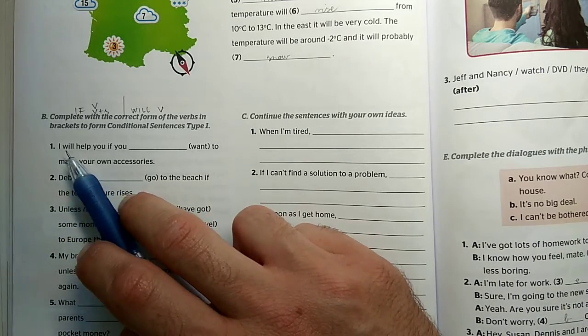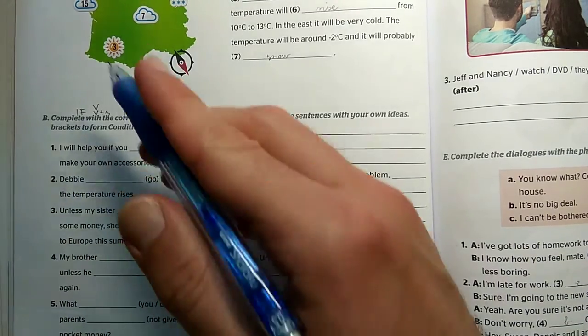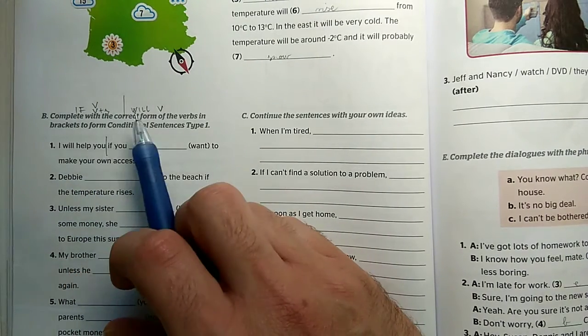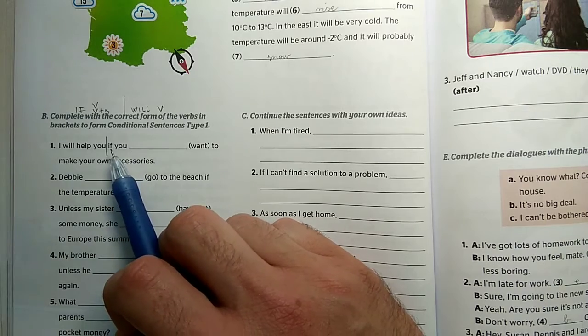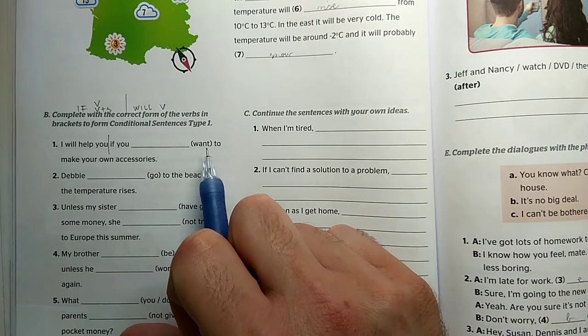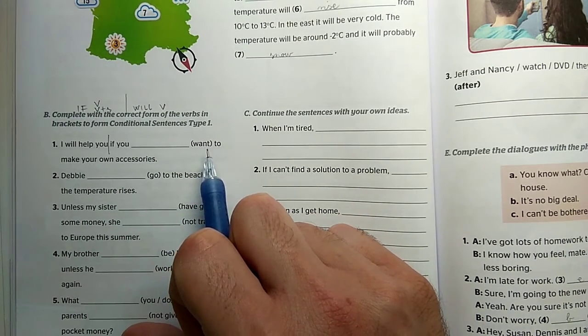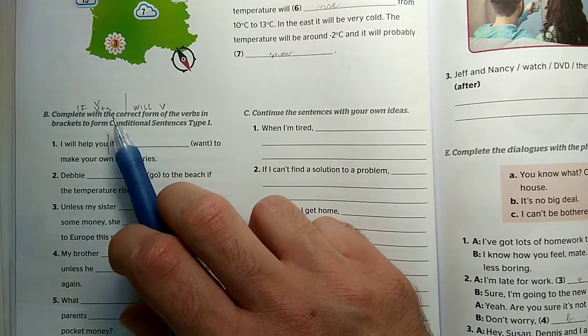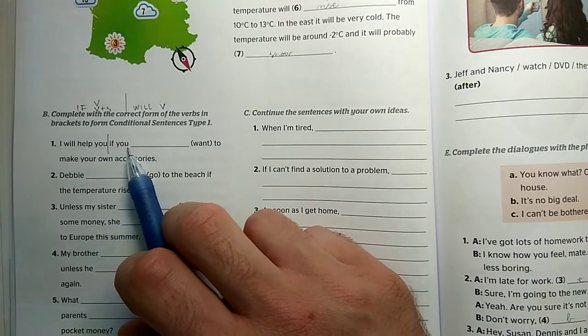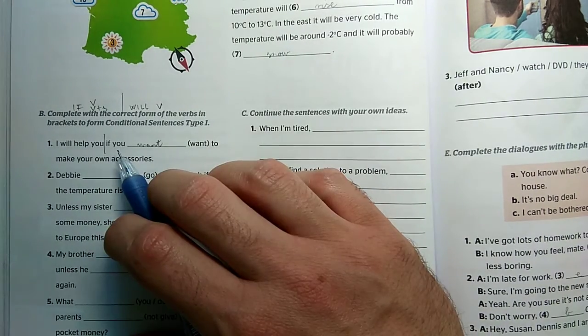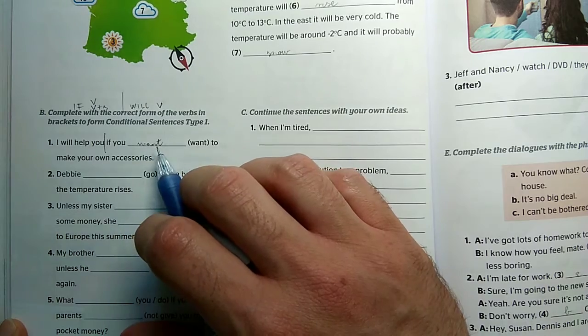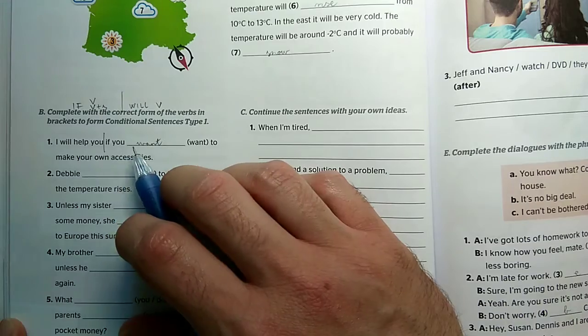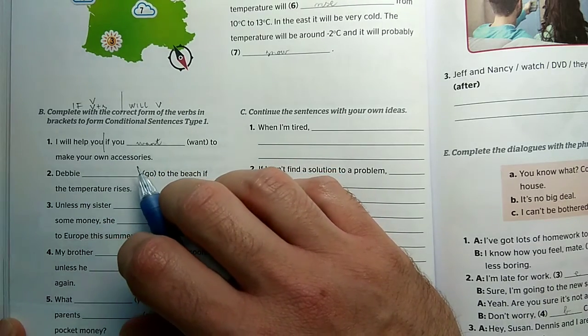Look at the first one. I will help you if - here's the clause boundary, this is the non-if clause with will and help. So in the if clause we need to put the verb in present tense. You just need to decide if we're in third person and need the S or not. Well, obviously not. I will help you if you want to make your own accessories. I will help you if you want to make your own accessories.